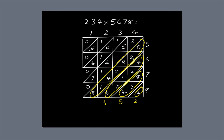8 plus 2 is 10, plus 8 plus 2 is 20, plus 1 plus 4 plus 1 is 26. Write the 6 below the diagonal and carry the 2 across to the next diagonal. 2 plus 1 plus 1 plus 6, plus 2 plus 2 plus 1 is 5, plus 5 is 10, plus 7 plus 1 plus 2 is 20. Write 0 next to the diagonal and carry the 2 across to the next diagonal.